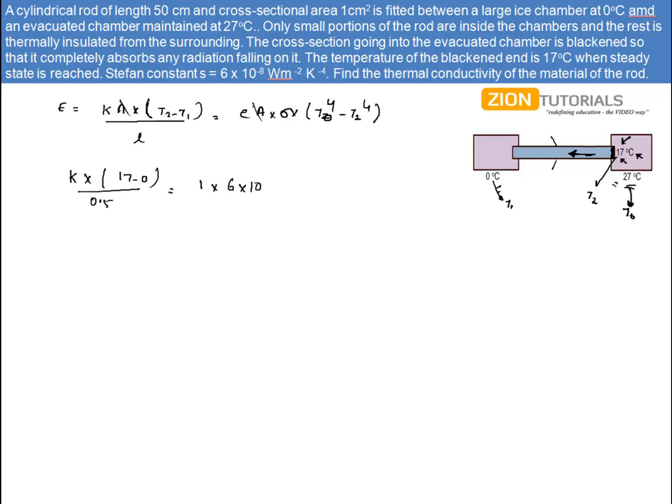Emissivity is 1 because it is a black body, and sigma is given as 6 times 10 to the power minus 8. It comes out to be 27 degrees, but I must convert it into Kelvin, so 300 to the power 4 minus T₂ that is 290 to the power 4.